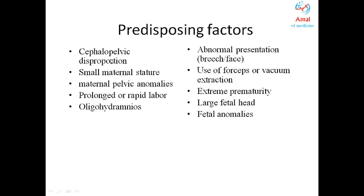Some predisposing factors include cephalopelvic disproportion, small maternal stature which could lead to pelvic anomalies, prolonged or rapid labor, oligohydramnios (decreased amniotic fluid around the baby), abnormal presentation such as breech or face presentation, use of forceps or vacuum extraction which can produce pressure on the infant's head, extreme prematurity, large fetal head, and fetal anomalies.